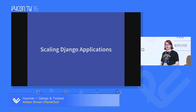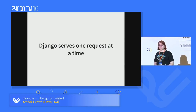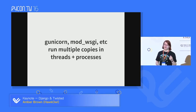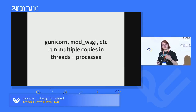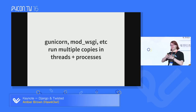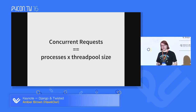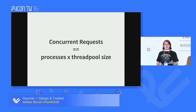I'd like to talk about scaling Django applications. At its core, Django serves one request at a time — one request comes in, it processes it, it sends a response, that's all it does. To serve multiple requests on your server farm, you can run it in a thread or a process. You can figure out how many requests you can handle by multiplying processes times thread pool size. With four processes and four threads per core, you get 16 concurrent requests.